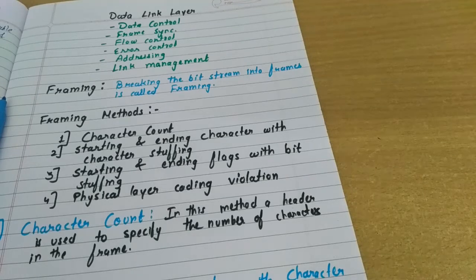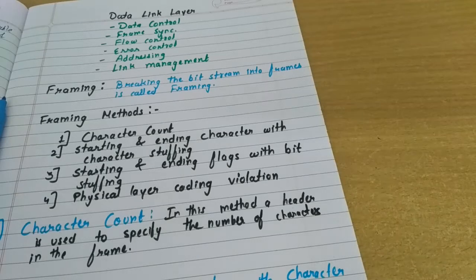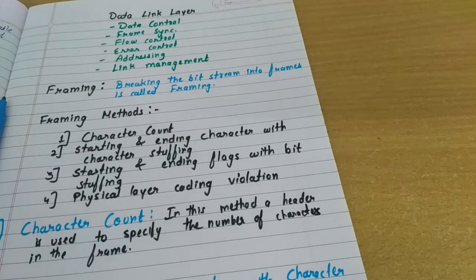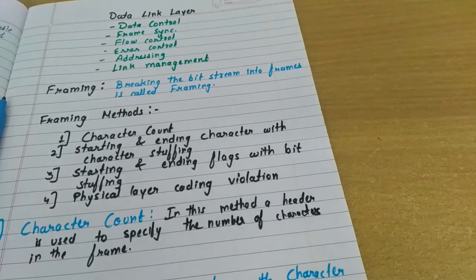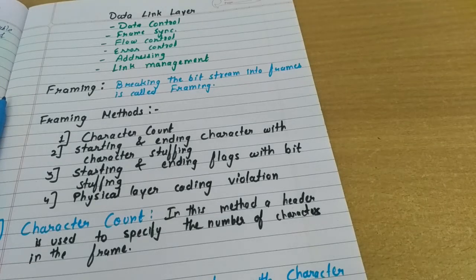The framing methods are: first, character count; second, starting and ending character with character stuffing; third, starting and ending flags with bit stuffing; and fourth, physical layer coding violation. The fourth one is very rarely used, and in practice we combine one or more of these methods to take advantage of all their plus points.